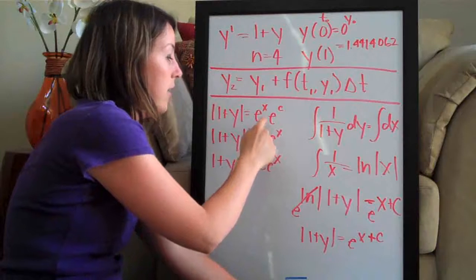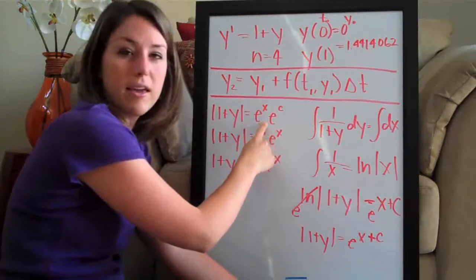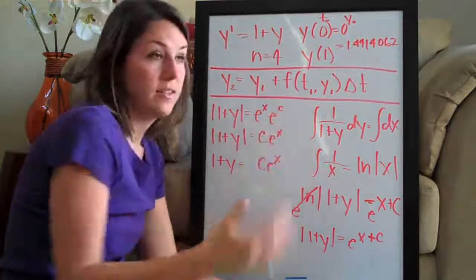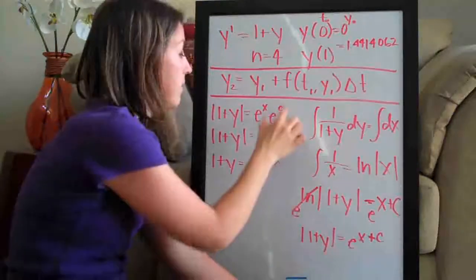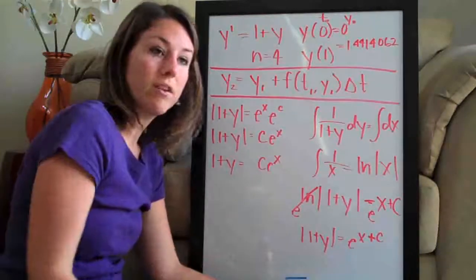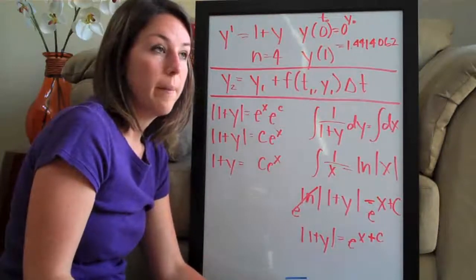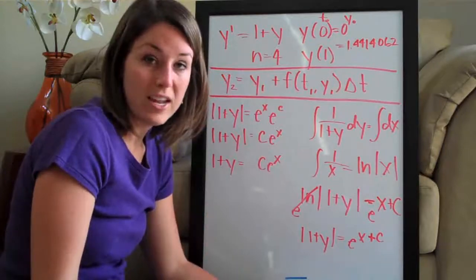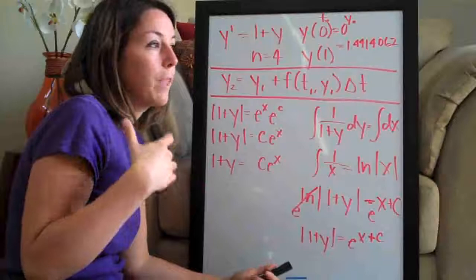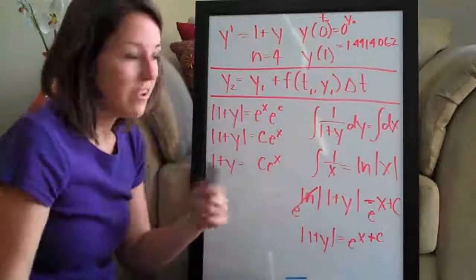So this e to the c here, you know like e is something like 2.7 whatever and then you raise it to c which is a constant like 2 or 3 or 4. This ends up just being a number so it can get absorbed into c. So can the positive or negative because c will come out to what it's supposed to be in the end anyway whether it's negative 10, positive 10, 2.7, 11, whatever it is.